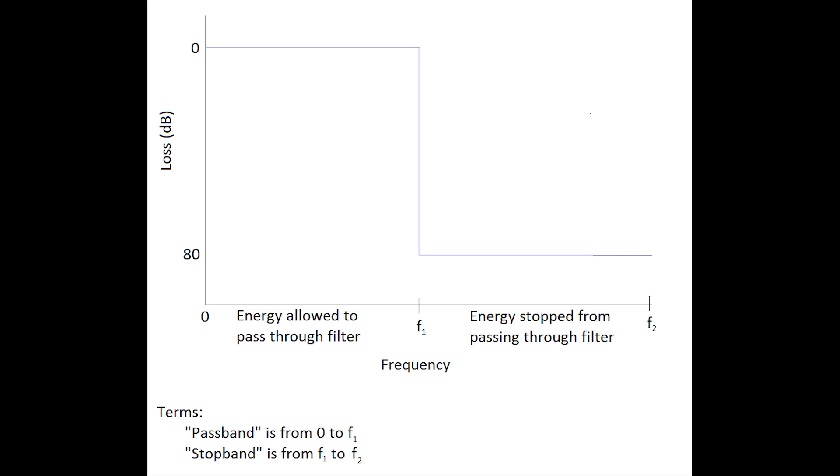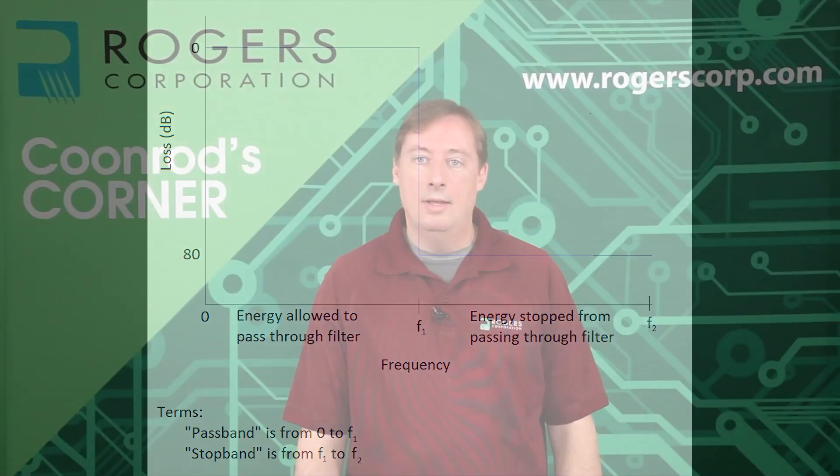To the right of that is the stop band, where the filter blocks energy in the frequency range from f1 to f2. You can see the loss there as an example is 80 dB, so it's pretty much shutting off all energy in that range of frequencies.